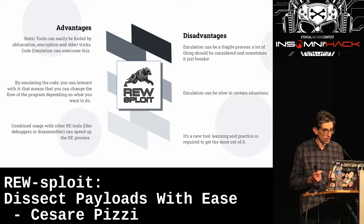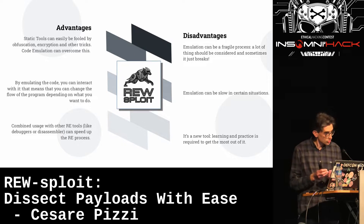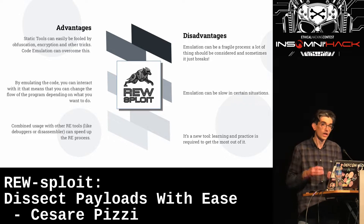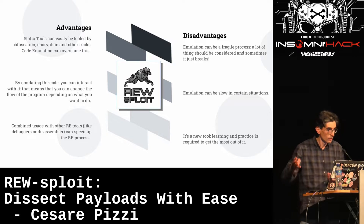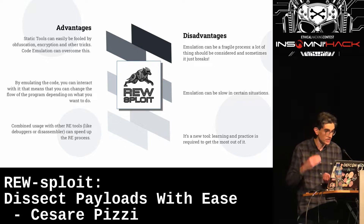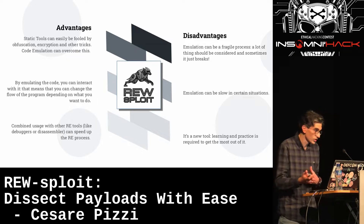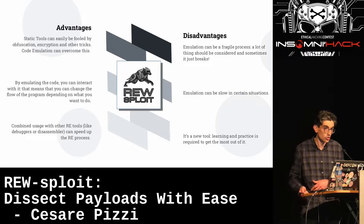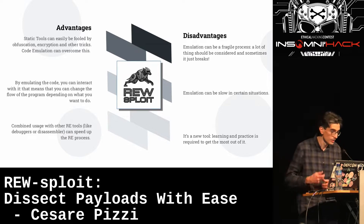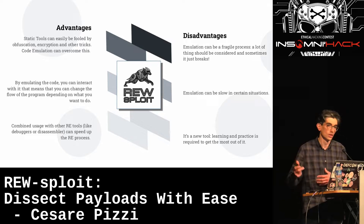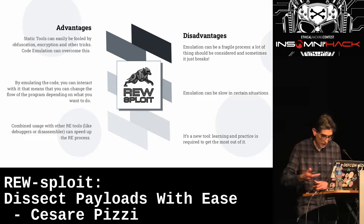By emulating the code we have a great advantage because we're actually interacting with it. We can make the code follow specific branches — for example, change a value in a register to take a different branch — because we're executing it step by step in an automated way. This can also be combined with other reverse engineering tools like IDA, Ghidra, or Radare2.